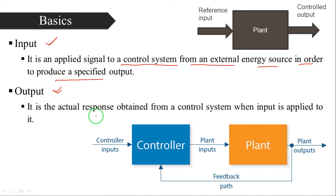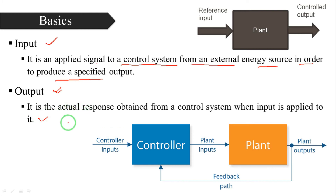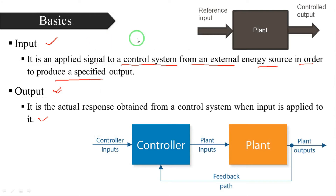Output is the actual response obtained from a control system when an input is applied to it. These are the basic requirements to understand the complete control system subject.